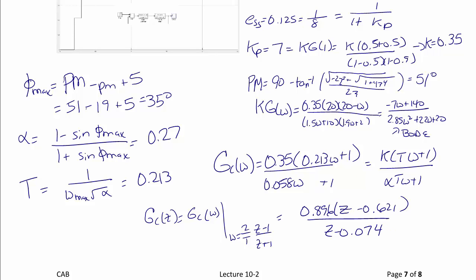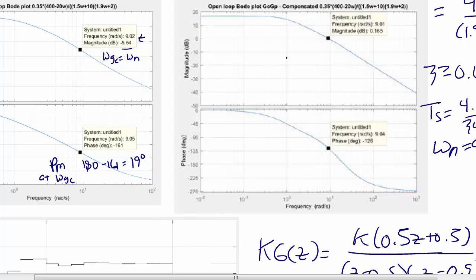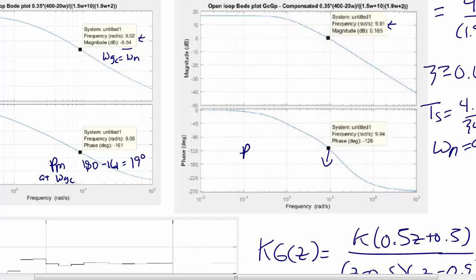Now let's take the compensated Bode plot and the step response. Here's our lead compensated Bode plot. What you should see here now at 9 radians per second, our new phase margin, 180 minus 126, is approximately 51 degrees.